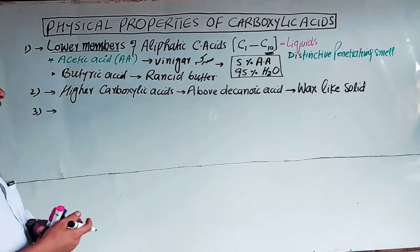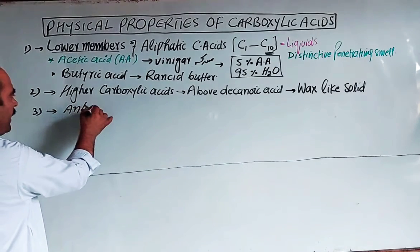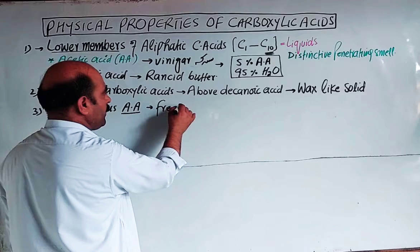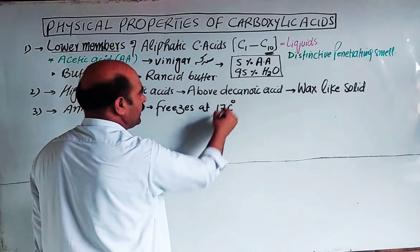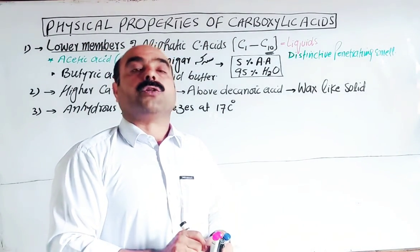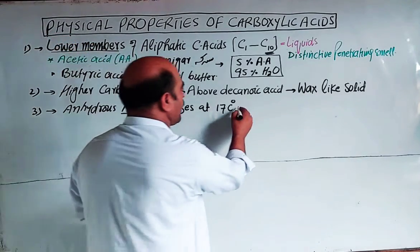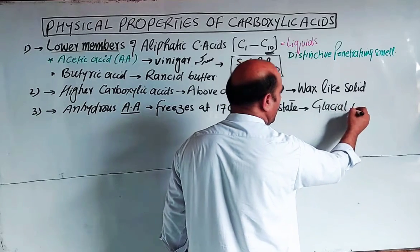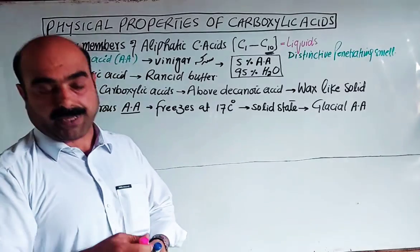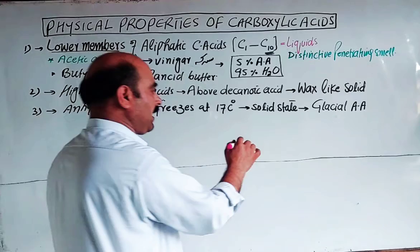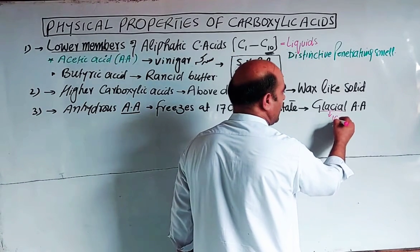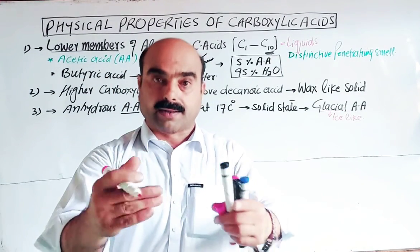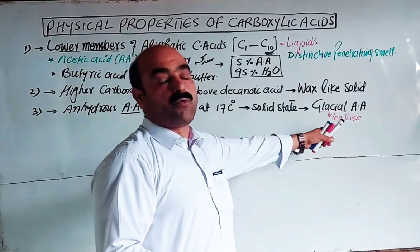Regarding acetic acid specifically: anhydrous acetic acid — that is, acetic acid without water — has a freezing point of 17 degrees Celsius. Below 17°C it becomes solid. This solid state of acetic acid is called glacial acetic acid, because 'glacial' means ice-like or glacier-like. It appears as a colorless, white solid.